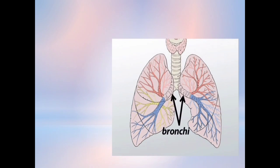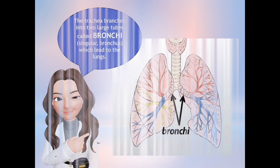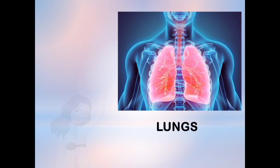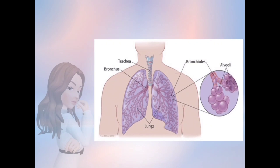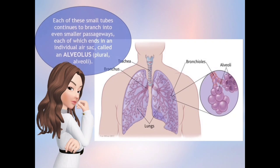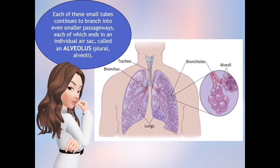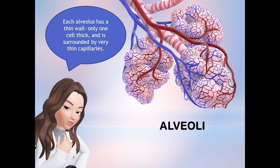The trachea branches into two large tubes called bronchi, which lead to the lungs. The lungs are the largest organs of the respiratory system and it is where gas exchange takes place. Each bronchus branches into smaller tubes called bronchioles that continue to branch into even smaller passageways, each of which ends in an individual air sac called an alveolus. Each alveolus has a thin wall, only one cell thick, and is surrounded by very thin capillaries.